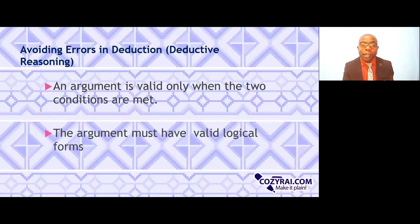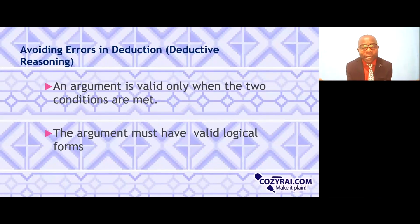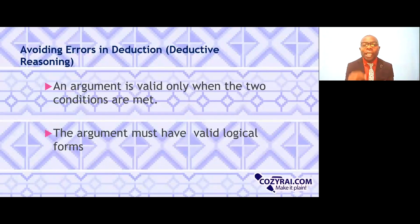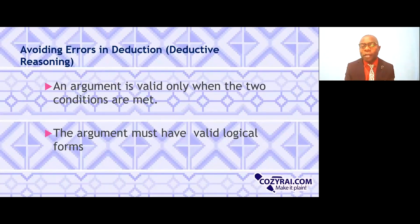Also, the argument must have valid logical forms. The argument should appeal to our logic — it should make sense and be universally accepted. So the logic in our argument should make sense. The two conditions must be met and the argument should be logical.